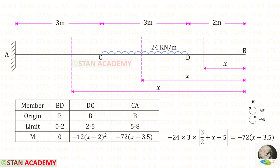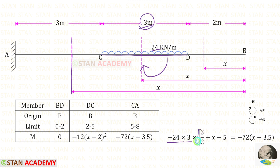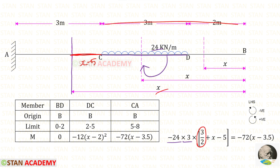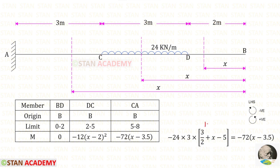Now let us find the bending moment M in section ca. Up to this section, we have only the uniformly distributed load of 24, acting over a distance of 3, in the clockwise direction so it is negative. We multiply by the distance 3, then take the centroid distance: 3 divided by 2 gives 1.5, and adding the remaining distance (x minus 5) gives (x minus 3.5). So M = minus 24 times 3 times (x minus 3.5), which is minus 72 times (x minus 3.5).